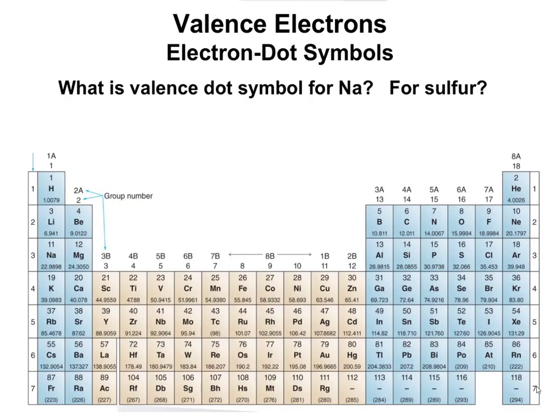So what is the electron dot symbol for sodium? Sodium, we come over here and find sodium. We see it's in group one, which means it has a total of one valence electron. So we would write sodium, and we would put a dot on it. And again, it doesn't matter if the dot goes above, below, to the right, or to the left. It doesn't matter.